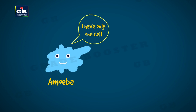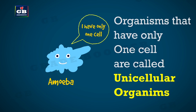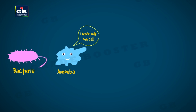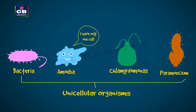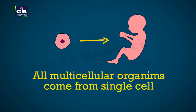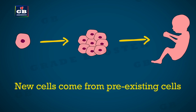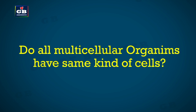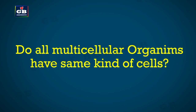All living things are made up of cells. Certain organisms are made up of only one cell; such organisms are called unicellular organisms — 'uni' means single. Examples include amoeba, chlamydomonas, paramecium, and bacteria. Some organisms are made up of many cells; these are called multicellular organisms. All multicellular organisms develop from a single cell, and cells produce cells of their own kind through cell division. All cells come from pre-existing cells. Multicellular organisms are made up of different types of cells.